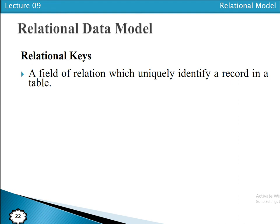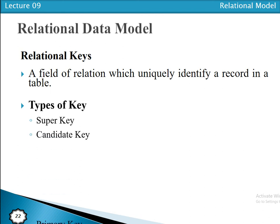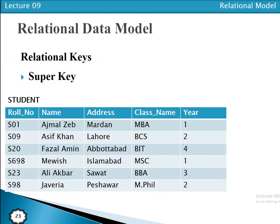We have different types of keys available: super key, candidate key, primary key, composite key, foreign key, and alternate key. The very first one is the super key. An attribute or set of attributes that are used to identify a record uniquely is called a super key. For example, a roll number that is used to identify the record uniquely is called a super key.